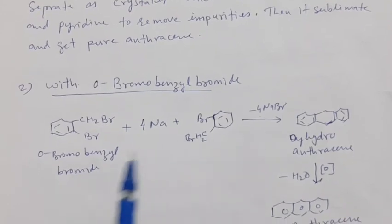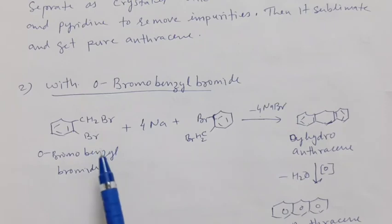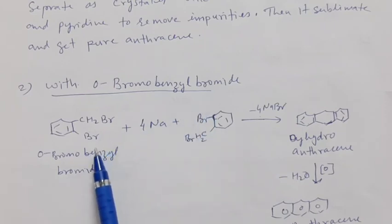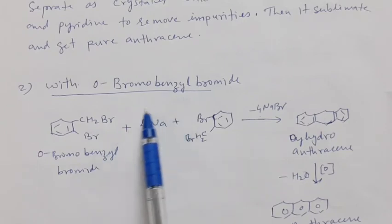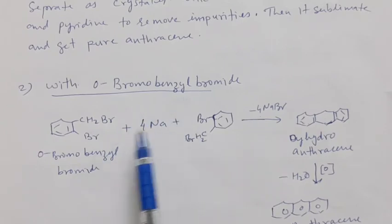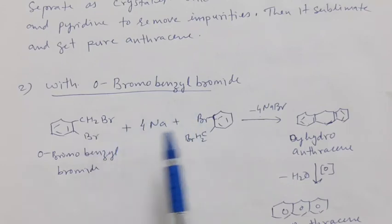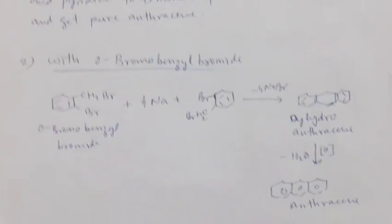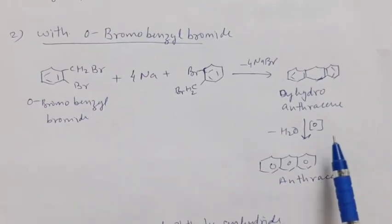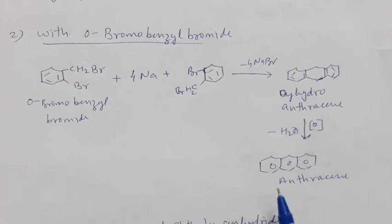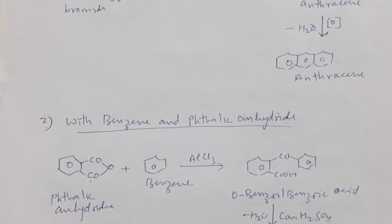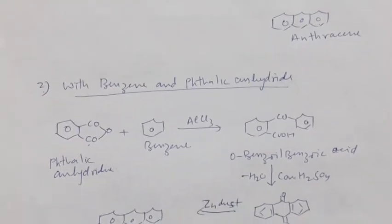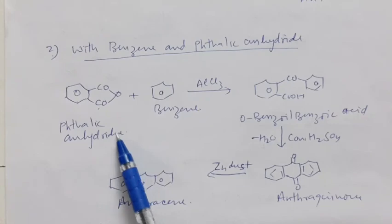Another synthesis uses ortho-bromo benzyl bromide. Two molecules of ortho-bromo benzyl bromide react with sodium metal; four NaBr molecules are removed and we get dihydroanthracene. This dihydroanthracene on oxidation and dehydrogenation gives anthracene.